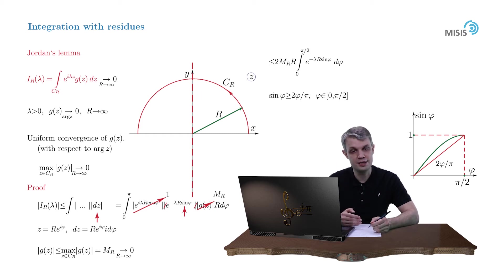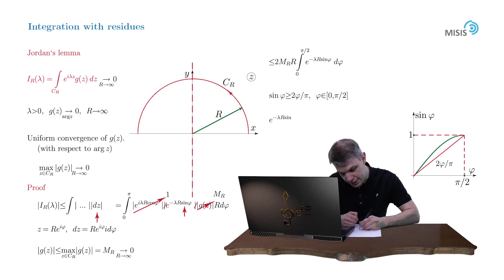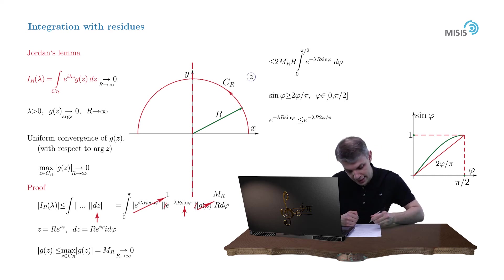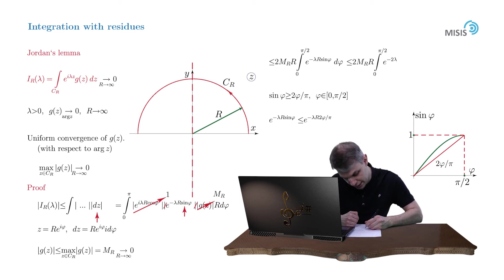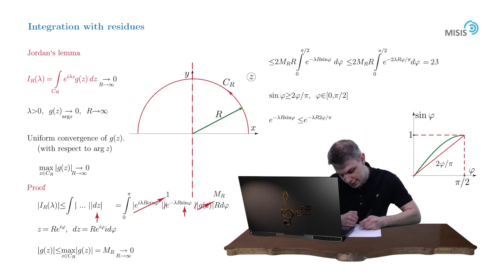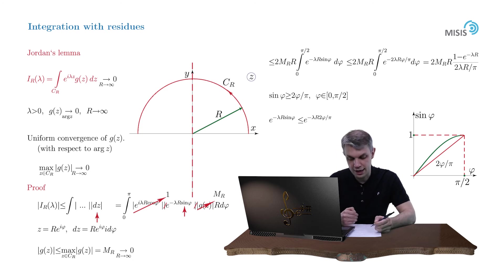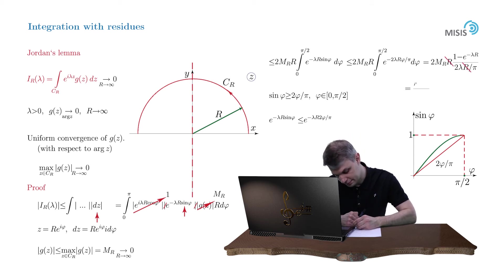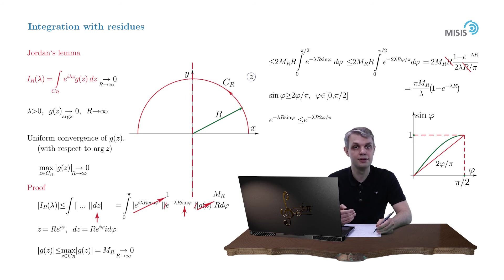Now, flipping the sign and exponentiating this inequality, we obtain the crucial inequality: e to minus λr sin φ is always smaller than e to minus λr times 2φ/π. Therefore we obtain the next estimate for our integral: it is less than M sub r times r times the integral over the simple exponential e to minus λr times 2φ/π dφ. This integral is easily taken with antiderivatives, and the answer is (1 minus e to minus λr) divided by (2λr/π). We see that the large prefactor r is compensated by the same large factor in the denominator, giving our final estimate. And as M sub r tends to zero as r tends to infinity, the whole integral tends to zero.